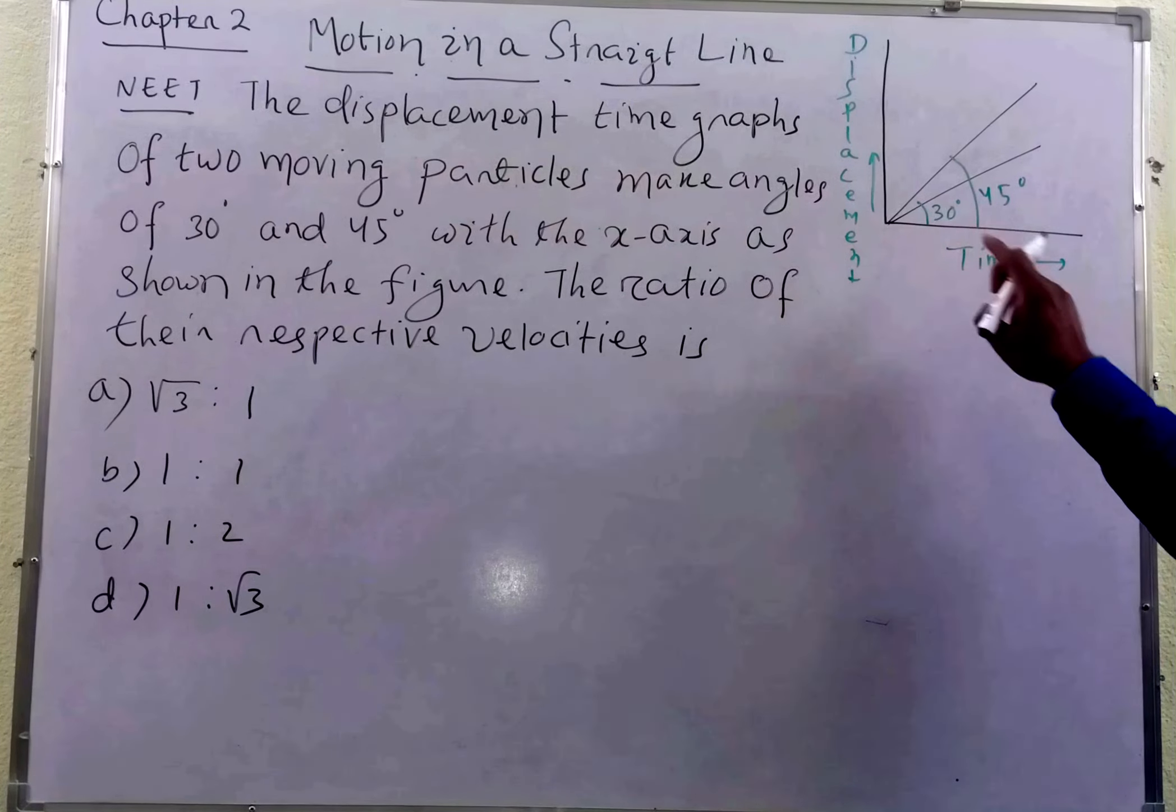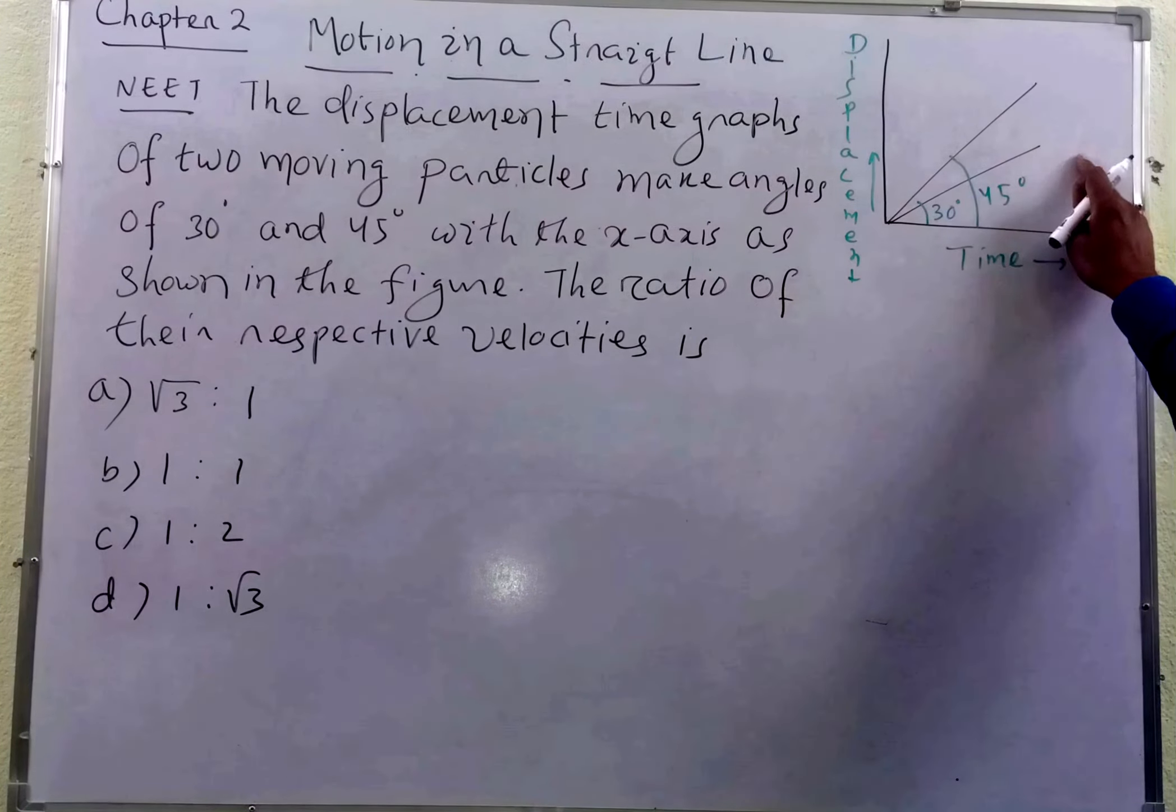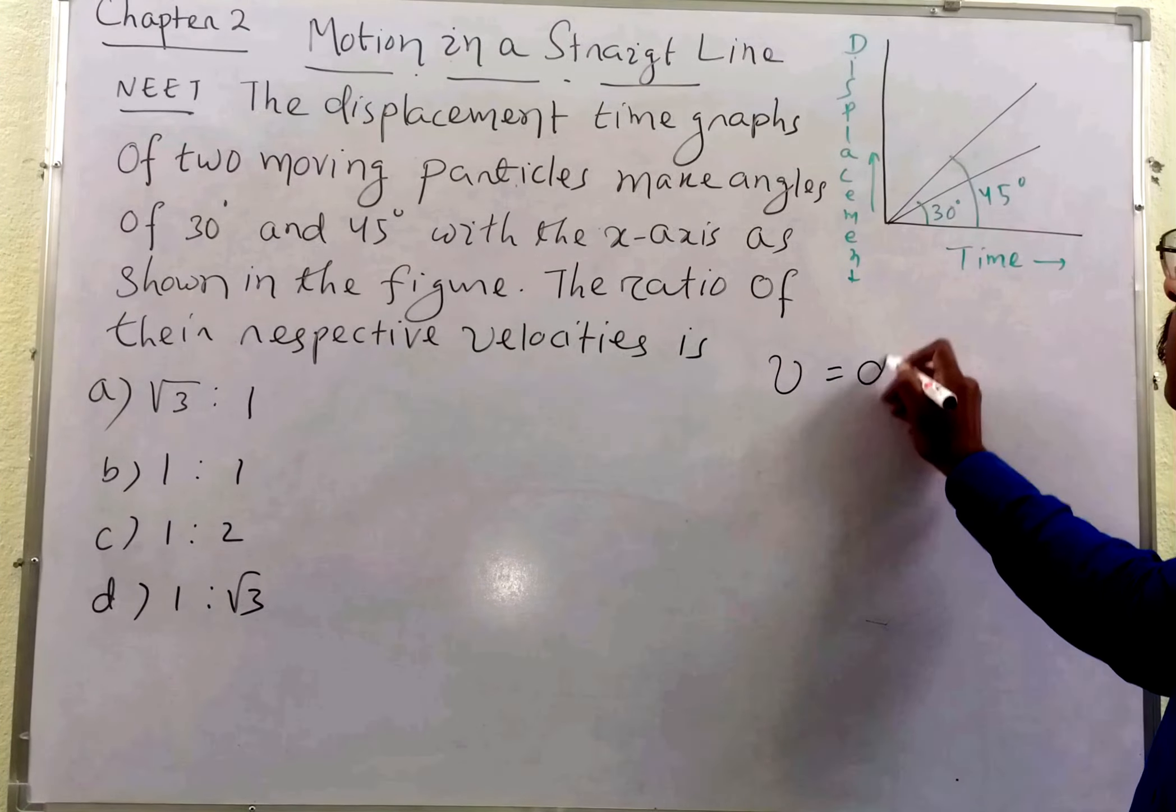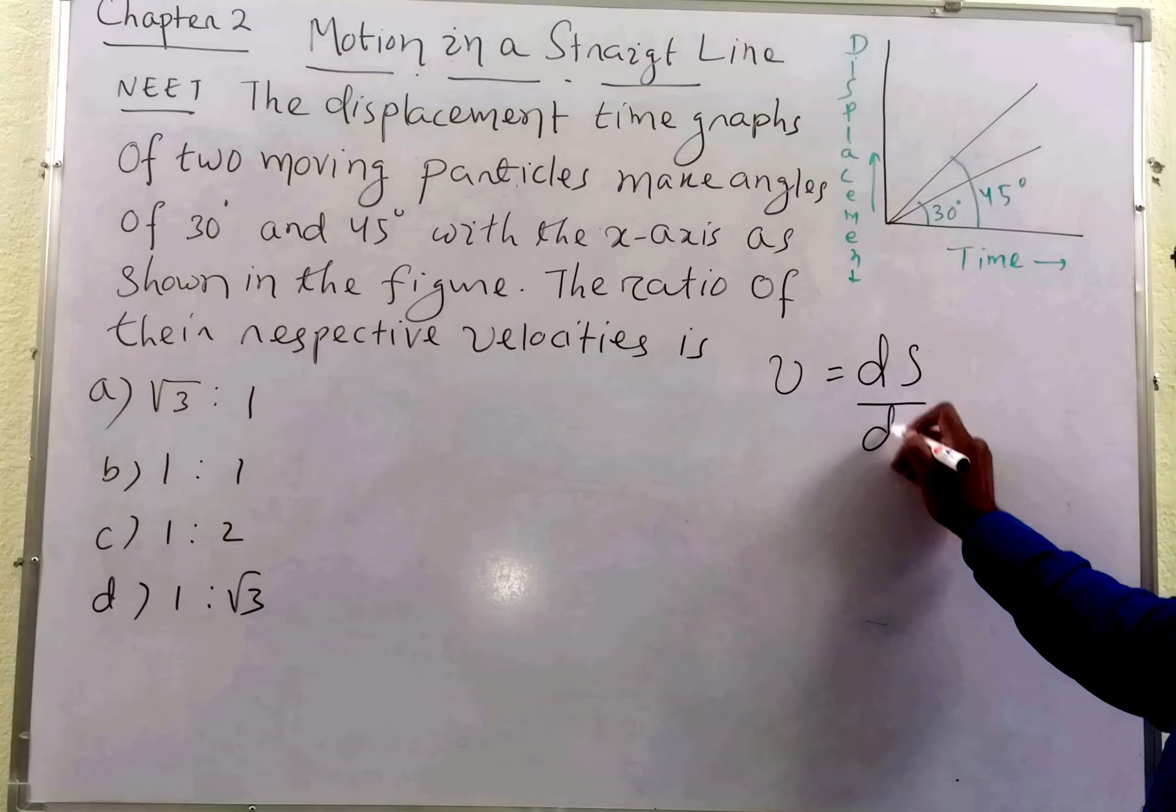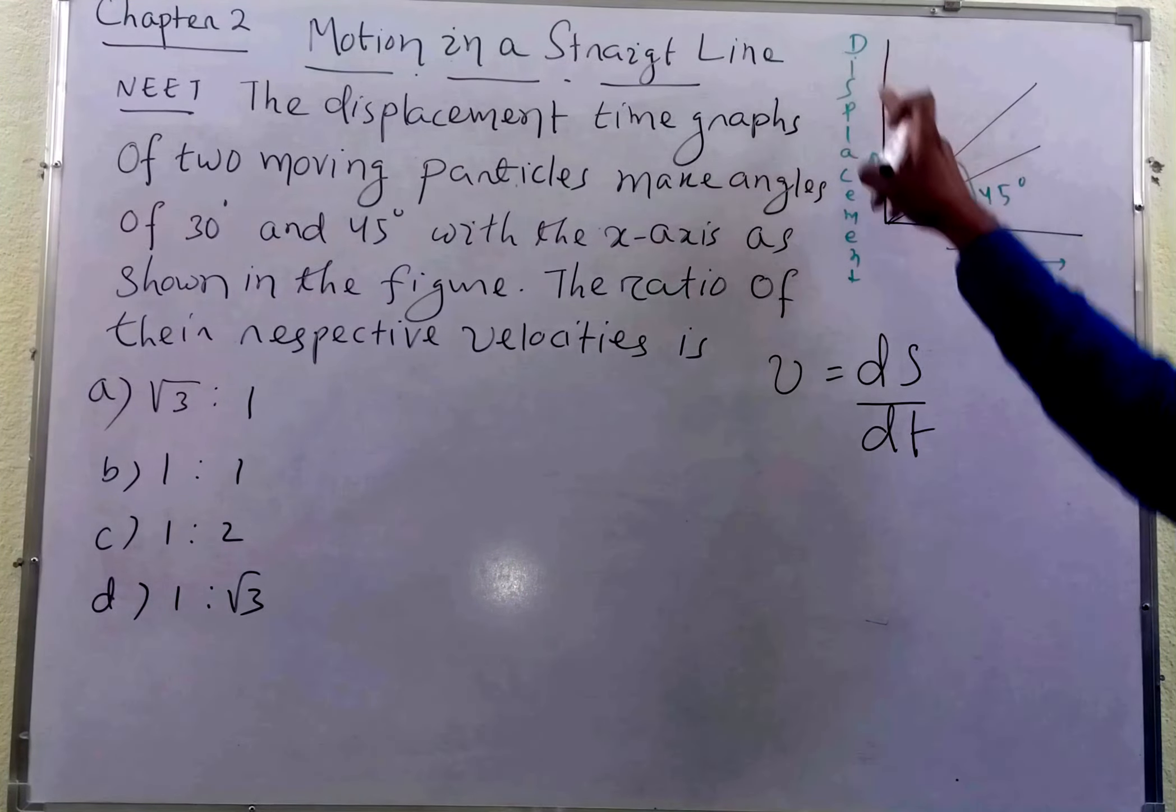To displacement-time ka jo graph hote hai students, us ka jo slope hote hai wo kya hote hai? Wo velocity hote hai. Because we know velocity is equal to displacement upon time. This is the displacement.